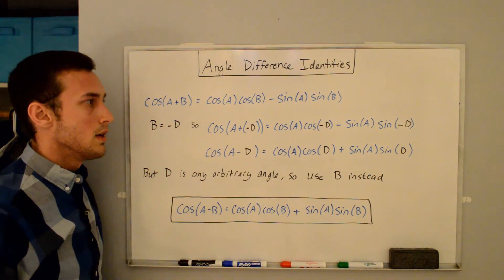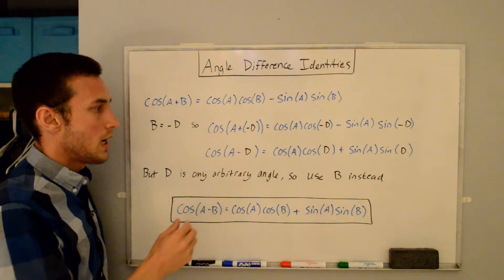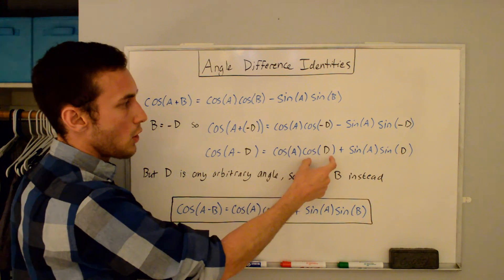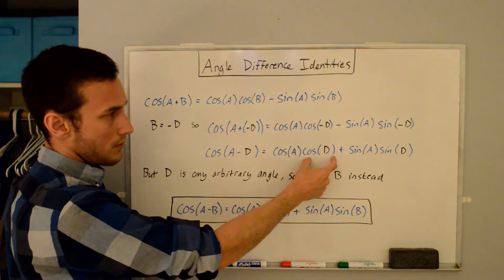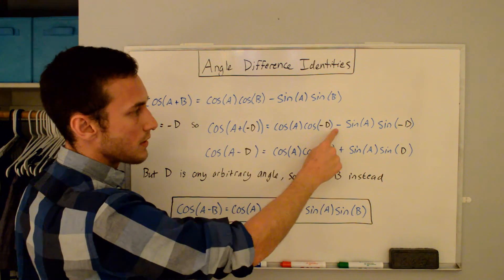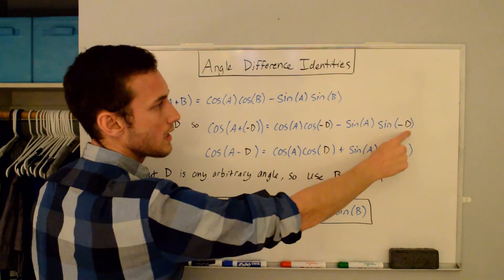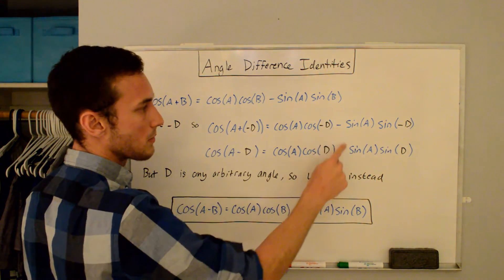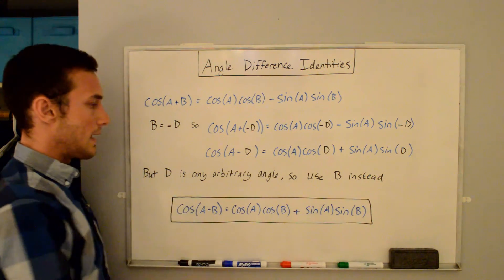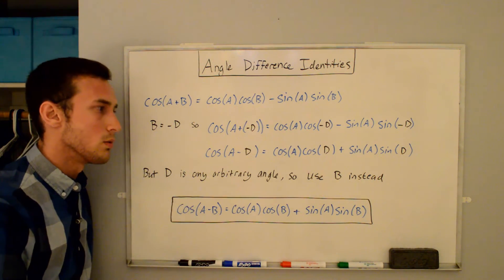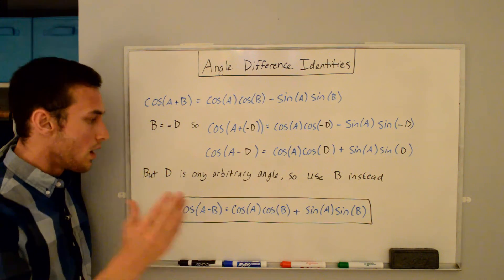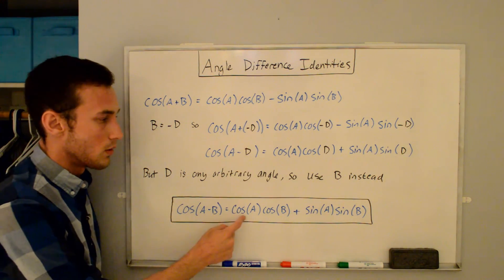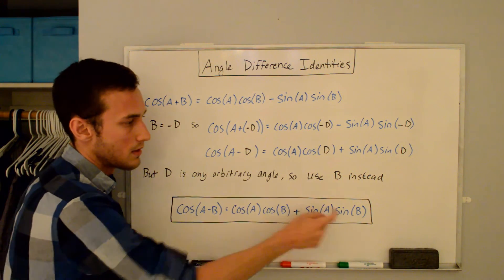Now we apply the odd and even properties — even for cosine, odd for sine. Cosine of a minus d equals cosine a times cosine d, since cosine of negative d equals cosine d. Then this negative becomes a plus, because sine of negative d equals negative sine d, giving us plus sine a sine d. Since d is any arbitrary angle, we substitute b back in: cosine of a minus b equals cosine a cosine b plus sine a sine b.